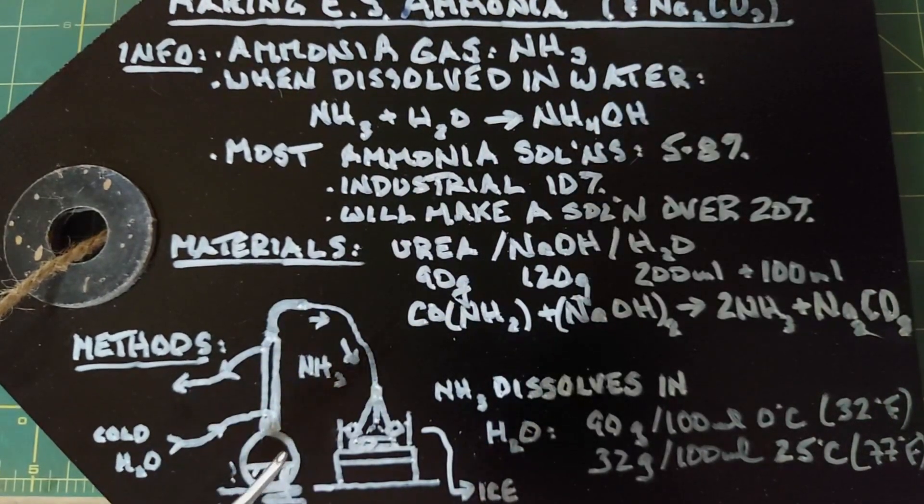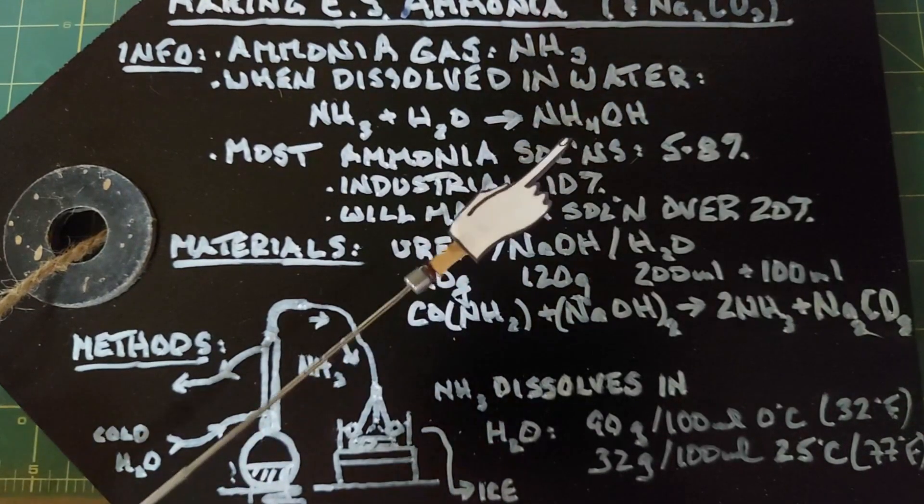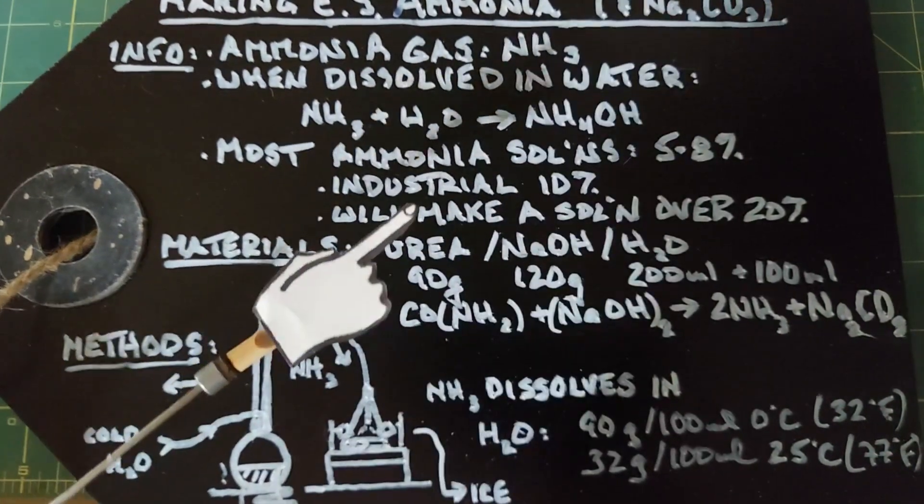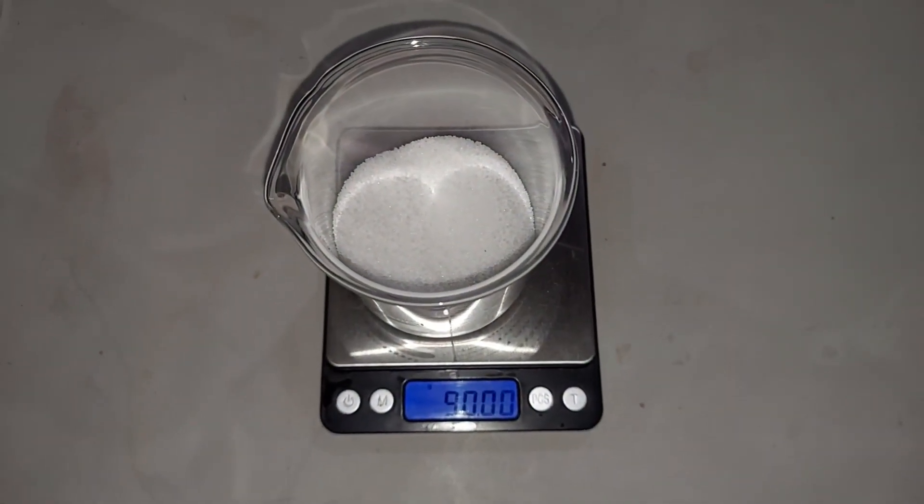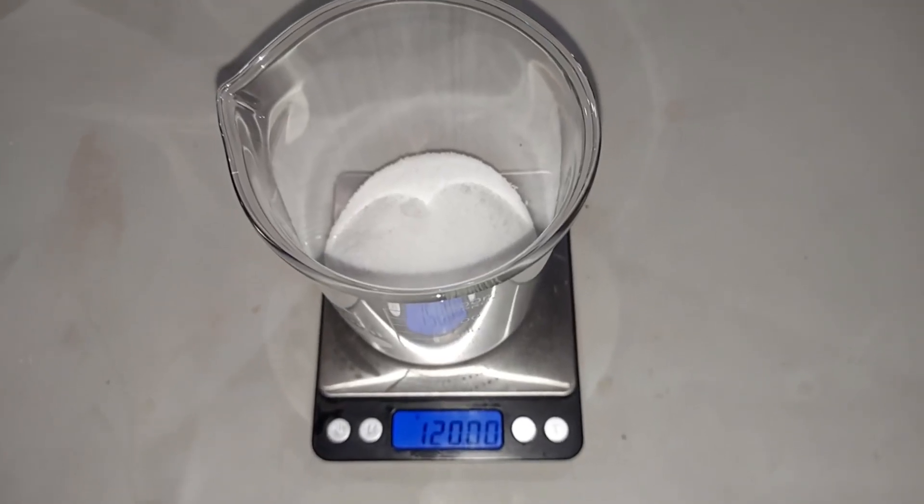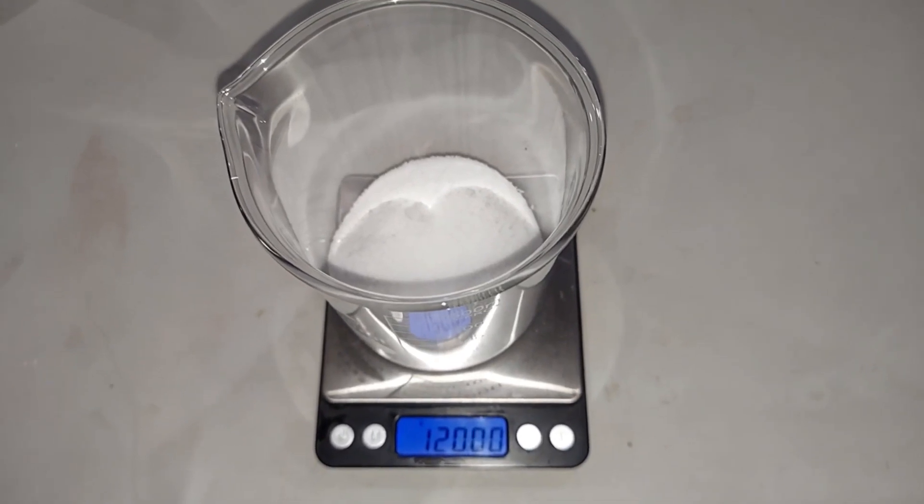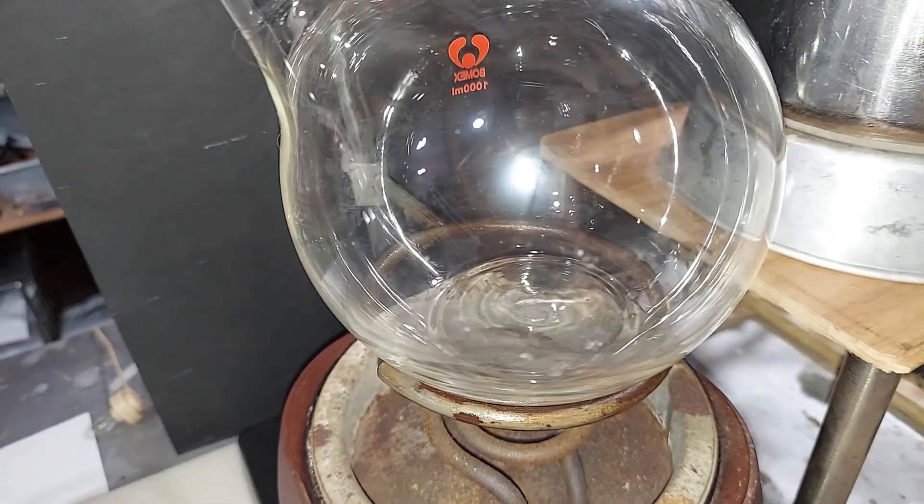After all the ammonia gas is used up in the mix, what we're left with at the bottom of the round bottom flask is sodium carbonate. Here is the 90 grams of urea pre-weighed, and here's the 120 grams of sodium hydroxide pre-weighed.